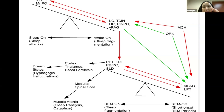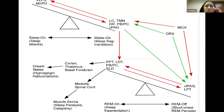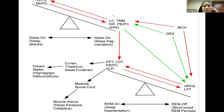Orexin is the stabilizer of both seesaws. Anything green is stimulating; anything red inhibits. The wake-on cells inhibit the sleep-on cells, and the sleep-on cells inhibit the wake-on cells.